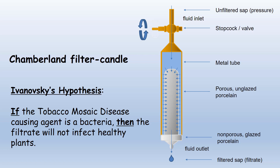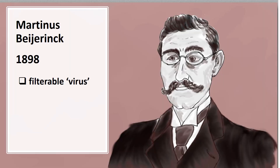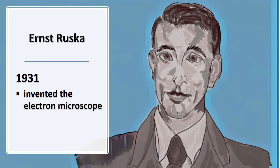This proved that the tobacco mosaic disease was not caused by a bacteria, but by something else that is much smaller. Unaware of Ivanovsky's work, Martínez Beijerinck, a Dutch botanist, performed similar experiments with similar results, but Beijerinck went one step further than Ivanovsky by calling the disease-causing agents a filterable virus. The actual identification of the tobacco mosaic disease-causing agents had to wait for the invention of the electron microscope by Ernest Ruska and colleagues in 1931.